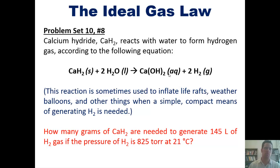In this problem, calcium hydride reacts with water to form hydrogen gas according to this equation: CaH2 (s) + 2 H2O (l) → Ca(OH)2 (aq) + 2 H2 (g). This chemical reaction is sometimes used to inflate life rafts, weather balloons, and other things when a simple compact means of generating H2 is needed. How many grams of calcium hydride are needed to generate 145 liters of hydrogen gas if the pressure of hydrogen gas is 825 torr at 25 degrees Celsius?